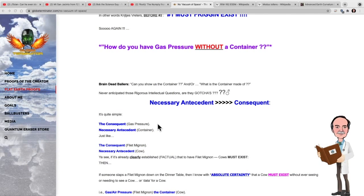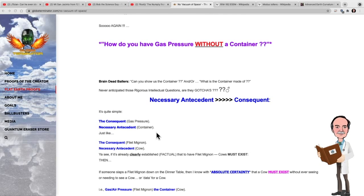Consequent: gas pressure. Necessary antecedent: container. No, that's not the case. You see, this is again a fallacious argument because it is not a necessary antecedent to gas pressure to have a container. You can do it by applying a force to the mass of the gas. In other words, performing work on the system.